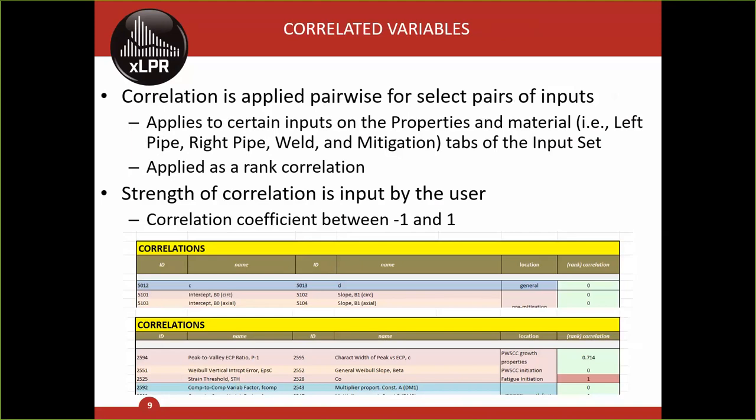XLPR also gives the user the option to pairwise correlate sample values for several inputs. Inputs that can be correlated include several probability of detection model parameters on the properties tab, as well as general material properties, initiation model parameters, and growth model parameters, which are on the left pipe, right pipe, valve, and mitigation tabs of the input set. At the bottom of these tabs, there's a box labeled correlations that identifies which pairs of inputs can be correlated.